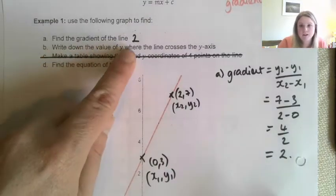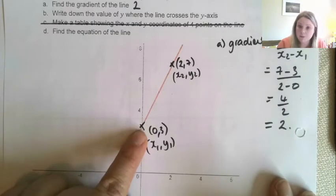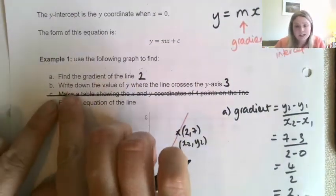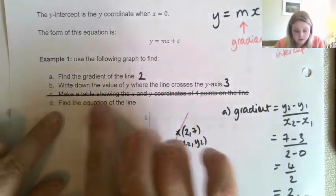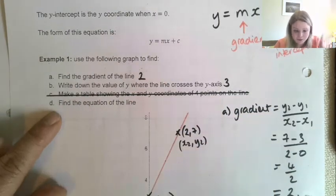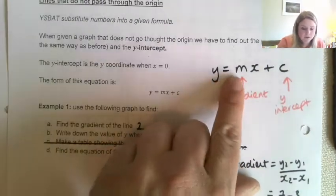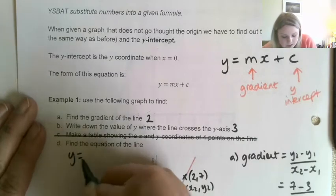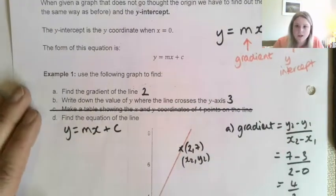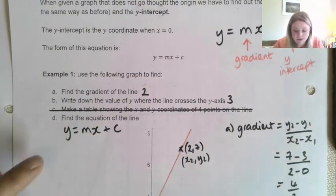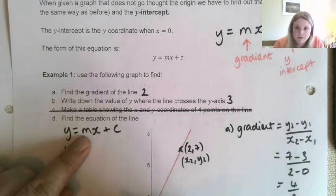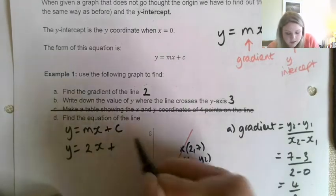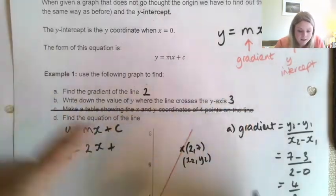Part B: write down the value of y where the line crosses the y-axis. Well, that was that 3. I'm going to leave out C, that's not my focus for today. Find the equation of the line. So we know that because it's a straight line, it's going to be in this form, y equals mx plus c. But we now know the value of m and we know the value of c. So the value of m is the value of the gradient, which is 2x, and then c is the y-intercept, so that's that 3 value.